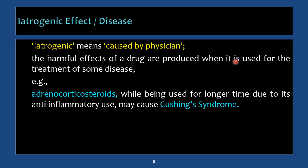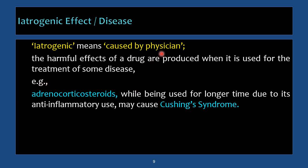Iatrogenic effect means reduced by the physician or caused by the physician — these are harmful effects of a drug when used for some other problem. For example, adrenocorticosteroids are very useful as anti-inflammatory agents in rheumatoid arthritis or other inflammatory conditions for prolonged periods. One important adverse effect is Cushing syndrome, which is the iatrogenic effect — produced by a drug prescribed by the physician.